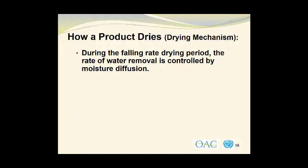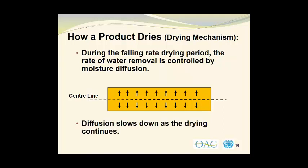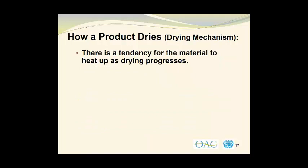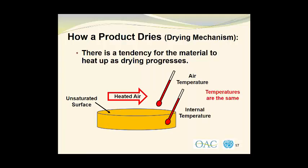During the falling-rate drying period, the rate of water removal is controlled by moisture diffusion to the surface. Moisture is now diffusing more slowly to the surface where it will be evaporated. There is also a tendency for the material to heat up as drying progresses. With an unsaturated surface, the air temperature and the internal temperature of the product are the same, and we have no evaporative cooling.